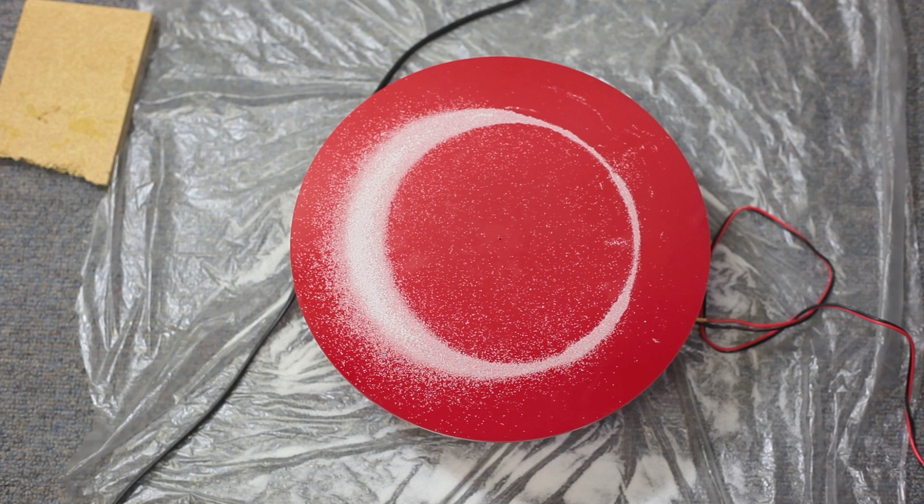We're going to crank it up until we start to see a pattern. We can see at about 180 hertz, we get a nice circle, which is about double the frequency it took to get a circle on the square plate. Now let's keep cranking it up. Again, be sure to wear ear protection as it can get very loud very fast.